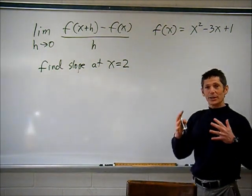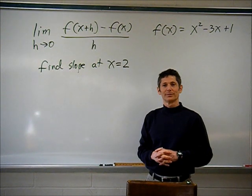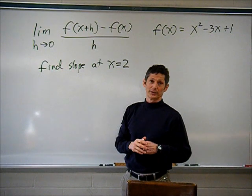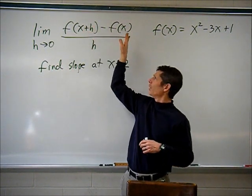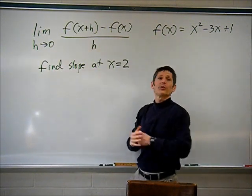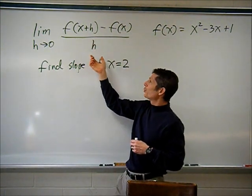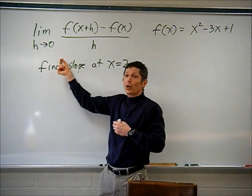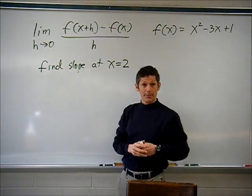We are going to use the limit definition of the derivative to find the slope at a point. It's going to be very exciting. This is your first calculus equation right here, is it not? I know it looks like a crazy thing, but this is really just a slope equation. F of x plus h minus f of x — this is just like y2 minus y1 — and h represents the difference in x's, the change in x. That's like the horizontal distance.